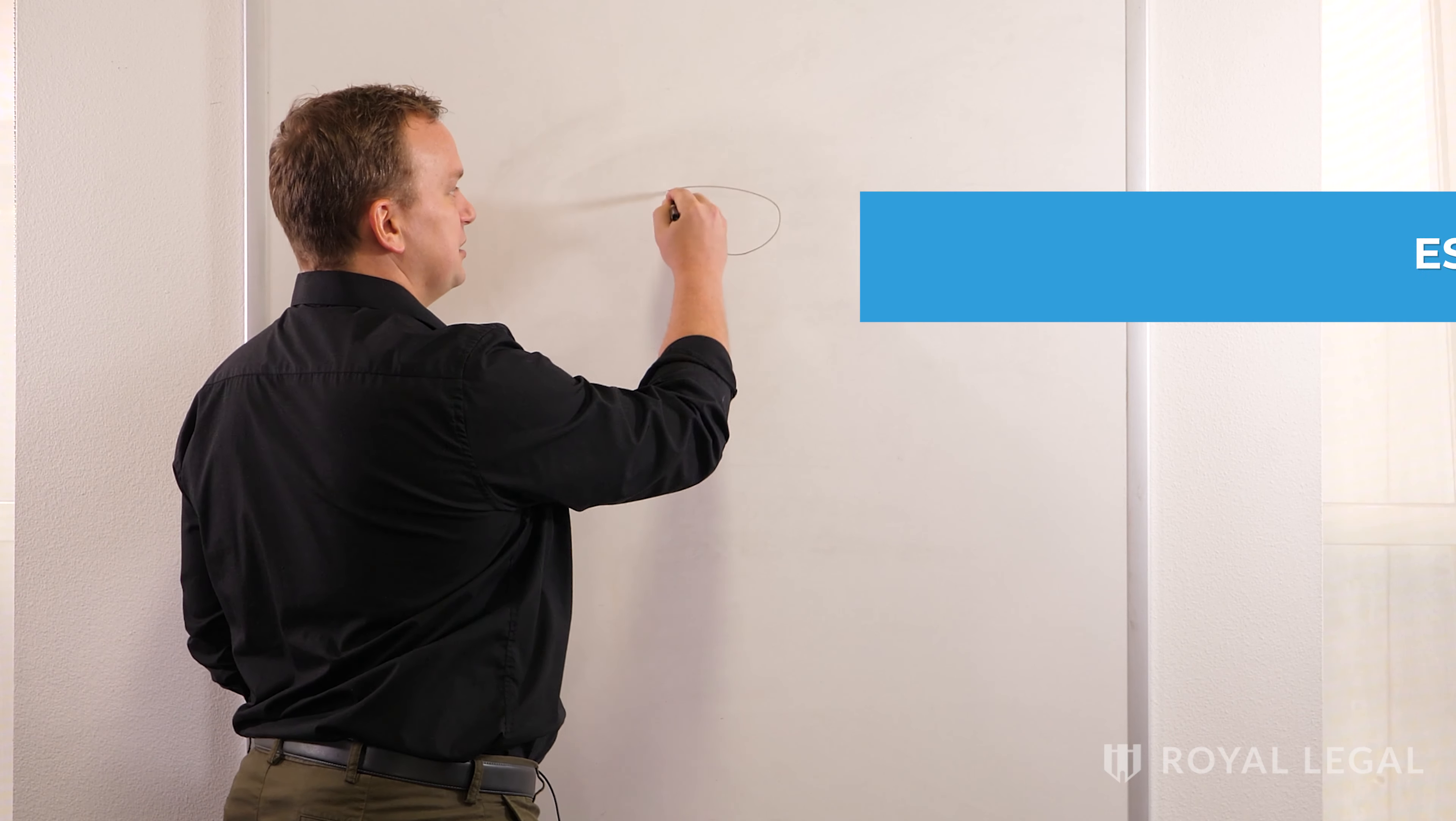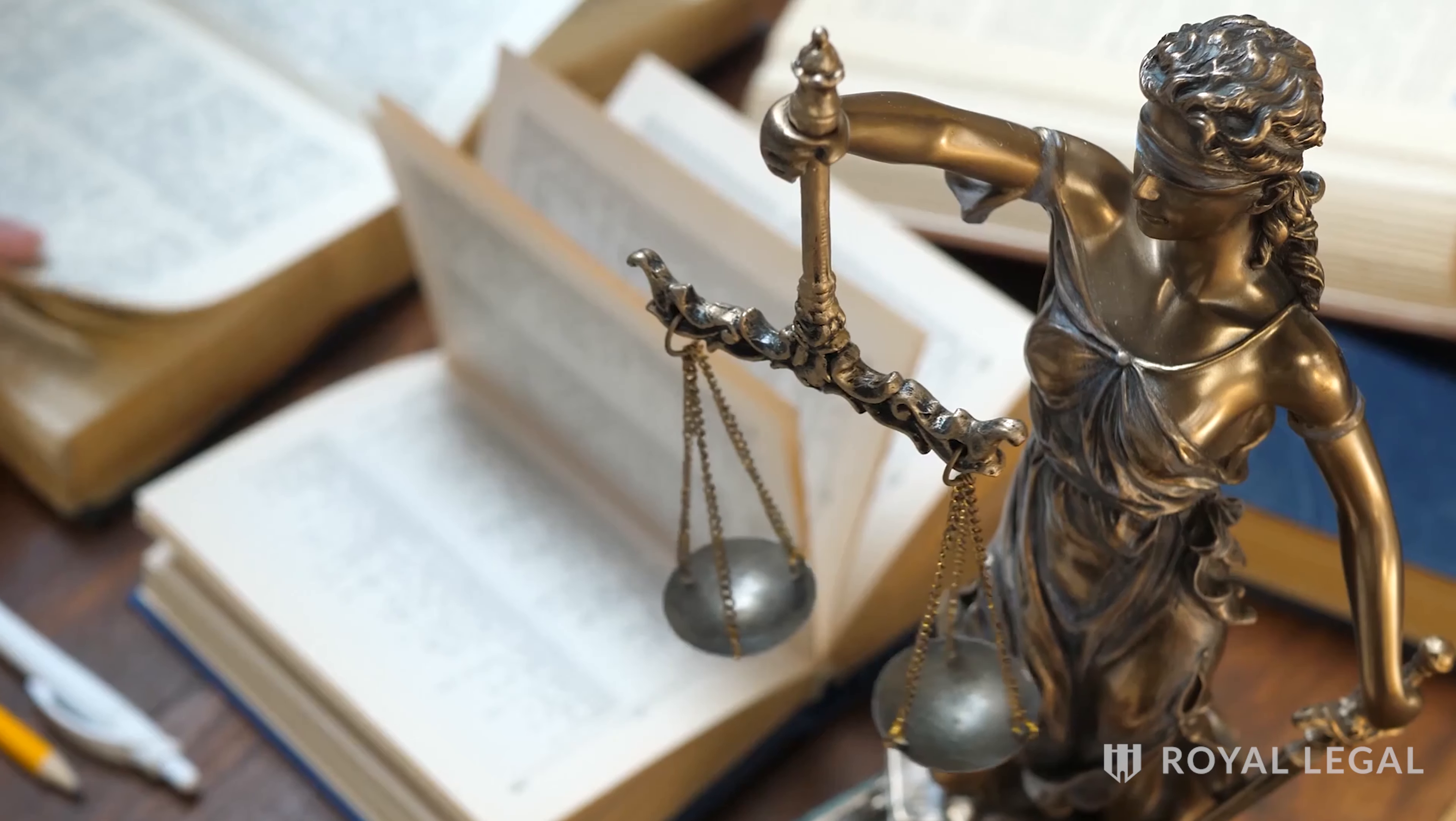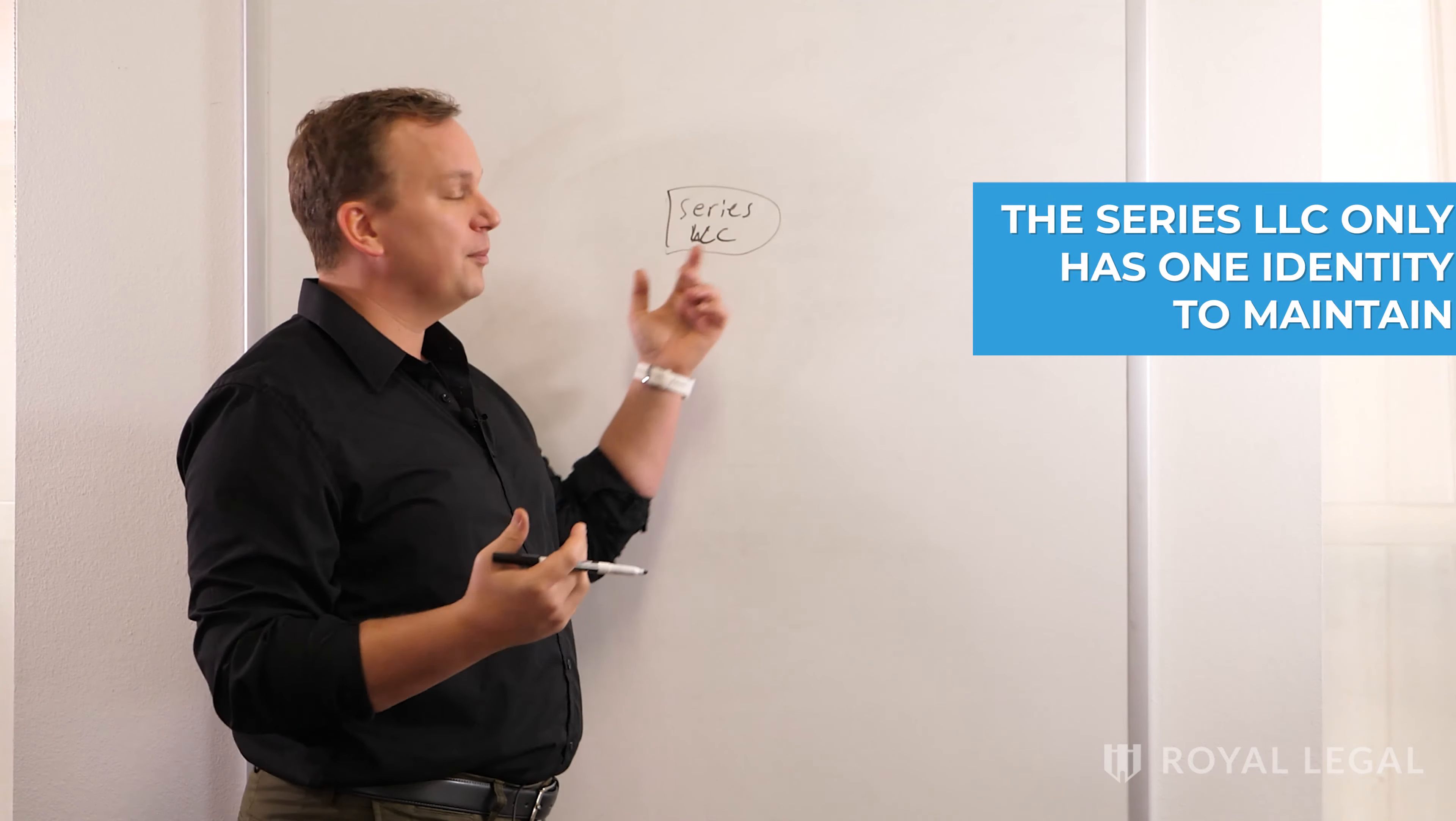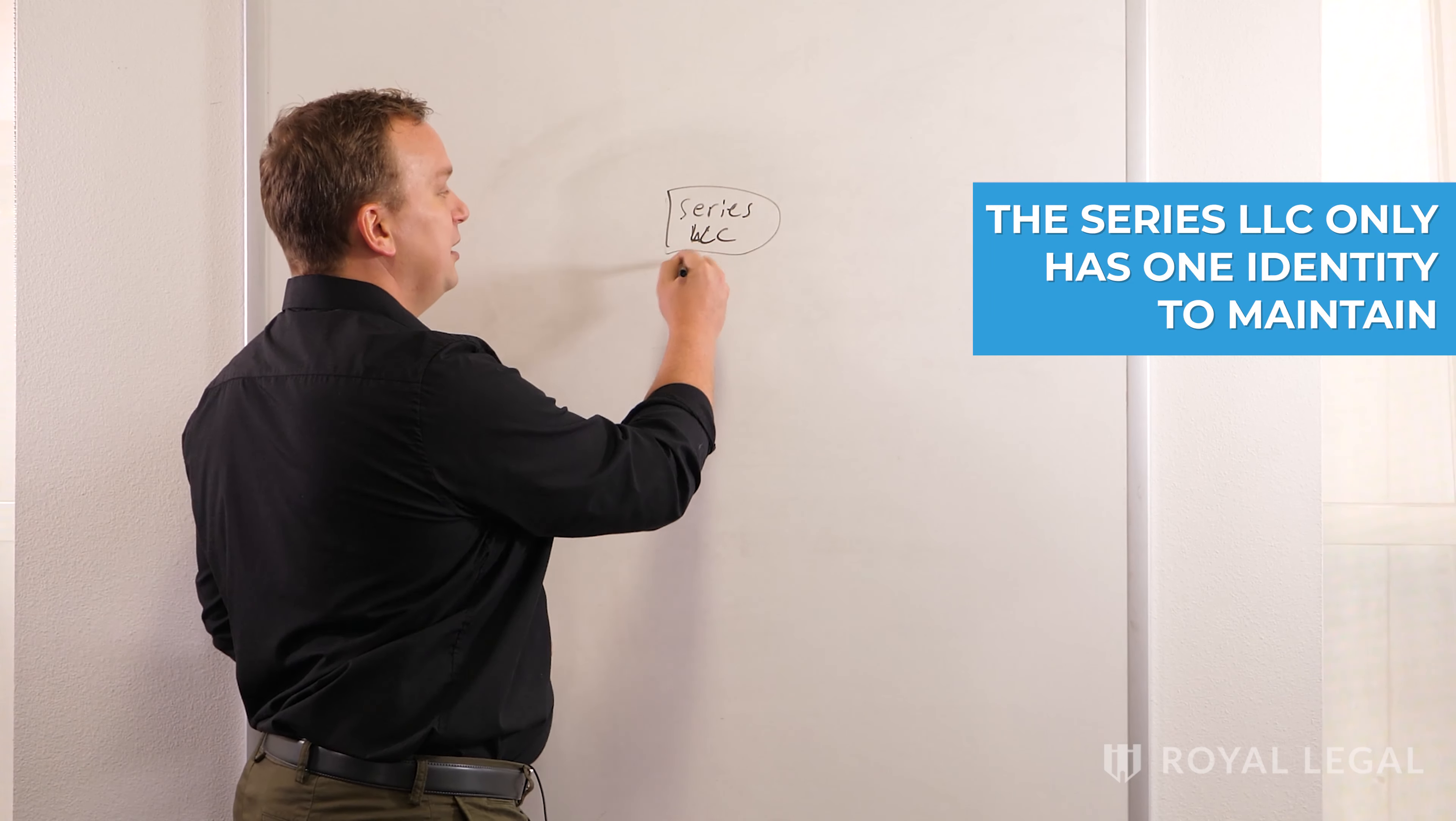You have your series LLC that you can establish in Delaware, Texas, Nevada, or Wyoming, anywhere that they have strong LLC laws known as charging order protections. You have one company with one EIN number, one bank account, one set of accounting records to maintain.